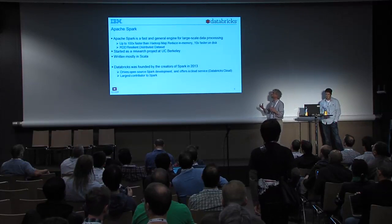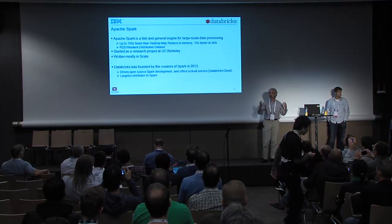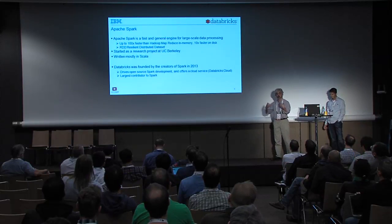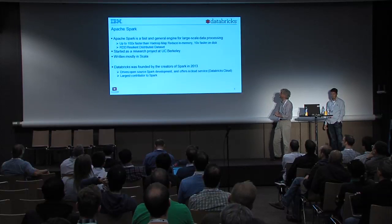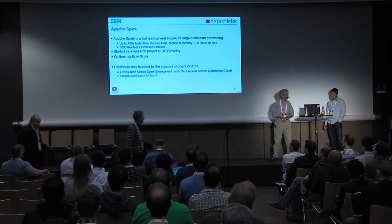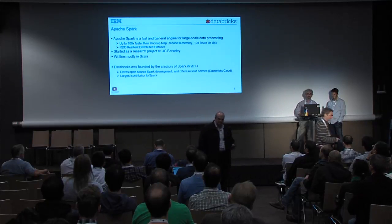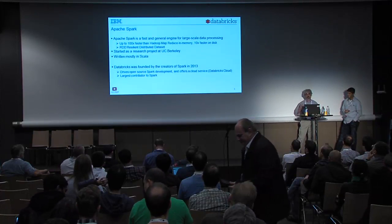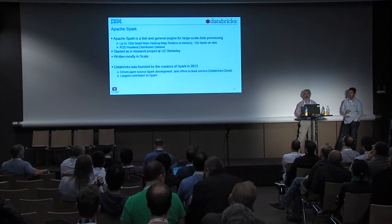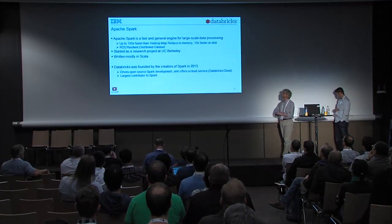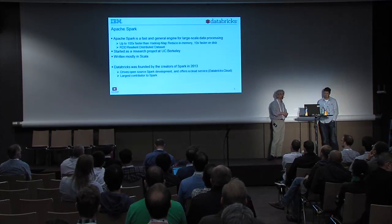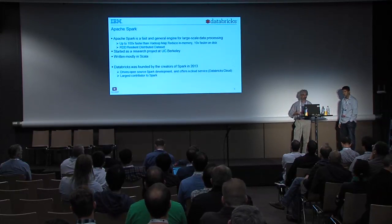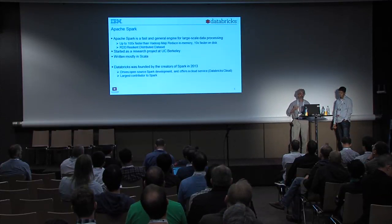Going into a little more detail about Apache Spark — I assume everyone here is familiar with Hadoop MapReduce. You can think of Apache Spark as the next-generation MapReduce-type calculation. It's the fastest-growing big data project in Apache. It is capable of operating for workloads that fit in memory two orders of magnitude faster than Hadoop MapReduce, and for things that go to disk it's an order of magnitude faster. One key innovation in Spark is what's called RDDs — Resilient Distributed Data Sets.